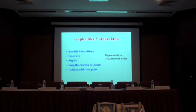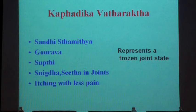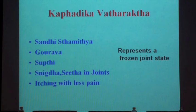My humble message is: a pain-dominant joint condition will be Vatadhika Vata Rakta; tenderness with reddish discoloration may be Pittadhika Vata Rakta; and a frozen condition with less pain and more stiffness may be Kaphadhika Vata Rakta. Identifying the fractional analysis is the art of treatment. Next time, don't simply diagnose Vata Rakta — identify Uttana or Gambhira, and the dosha predominance, because identifying pathogenesis will provide ample opportunities for wonderful treatment.